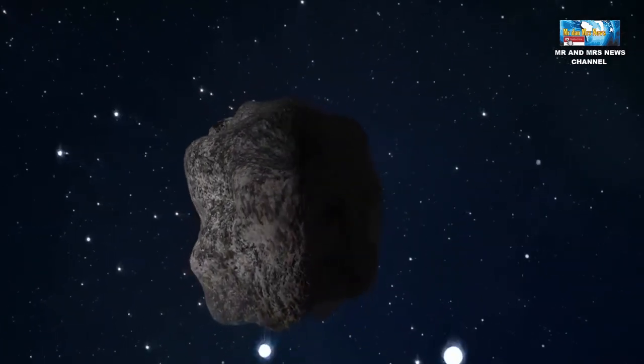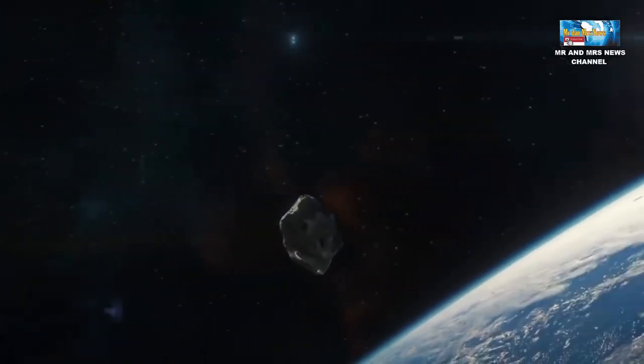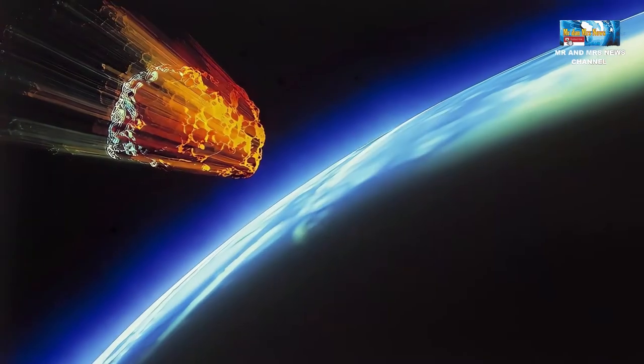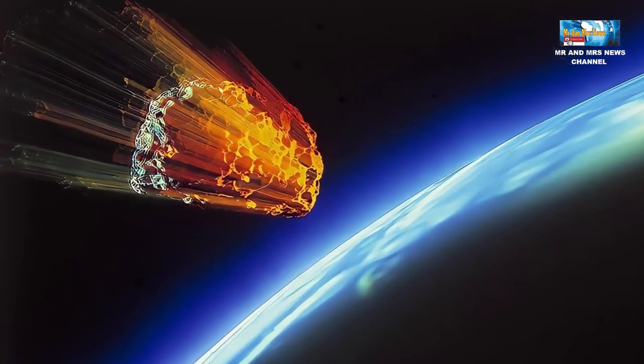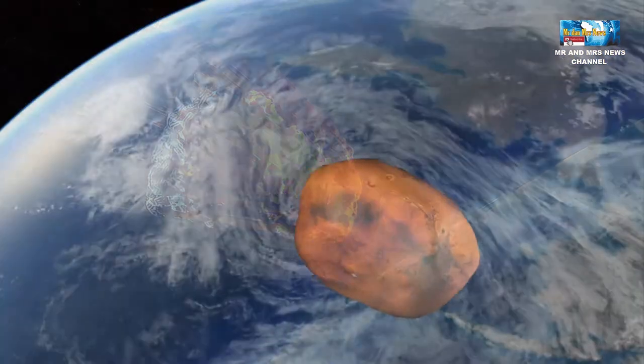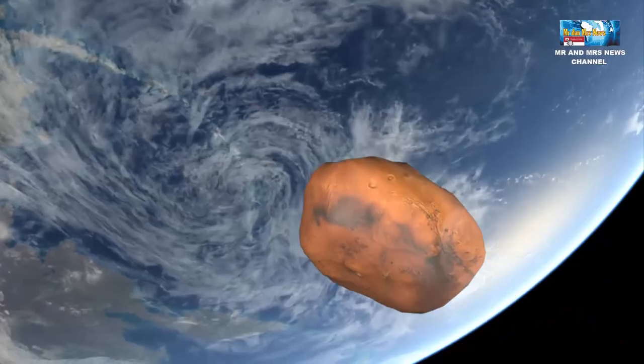Ketika meteoroid tertarik oleh gravitasi bumi, maka sebelum sampai ke bumi, meteoroid akan bergesek dengan atmosfer bumi. Gesekan tersebut akan menghasilkan panas dan membakar meteoroid tersebut. Nah, meteoroid yang habis terbakar oleh atmosfer bumi disebut dengan meteor.